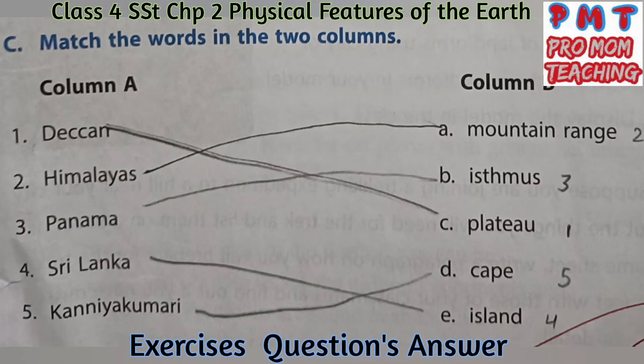Match the words in the two columns. First: Deccan — Plateau. Second: Himalayas — Mountain range. Third: Panama — Isthmus. Fourth: Sri Lanka — Island. Fifth: Kanyakumari — Cape.